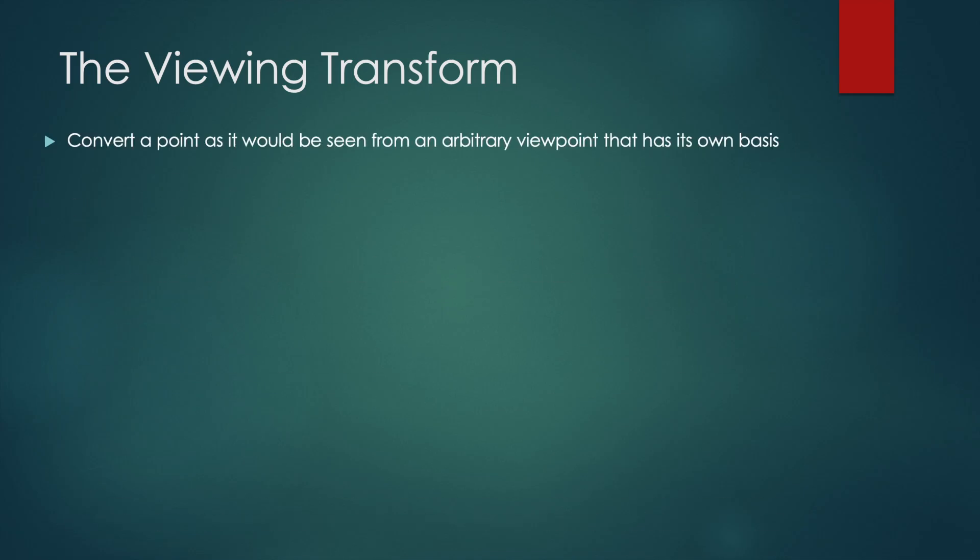The viewing transform converts any point in the world coordinate system to an arbitrary viewer's coordinate system. It can be broken down into two steps. Step one is translating the point as if the viewpoint is the origin. That is, a given point is rewritten as the difference vector between the point and the viewpoint.